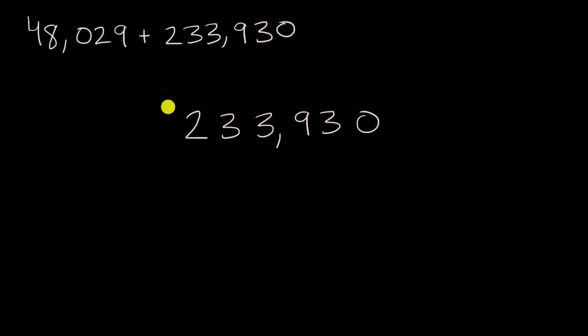So I'm going to write the ones place in the same column as the ones place on the top number. So this is the 10,000s place, so 48,029. So nine ones, zero ones, two tens, three tens, so on and so forth. And now I am ready to add.